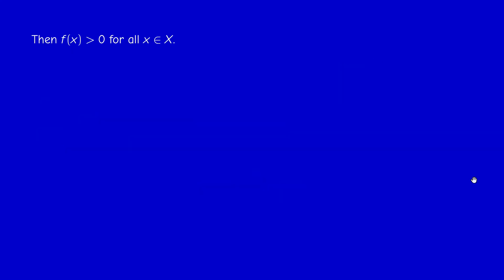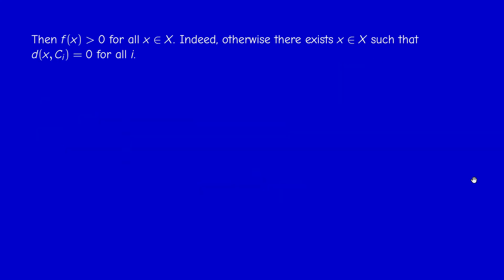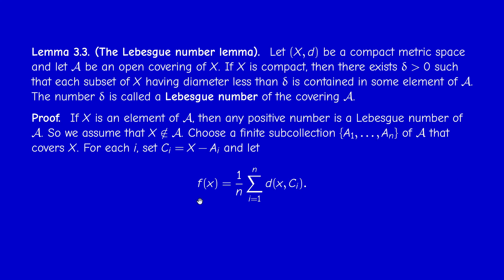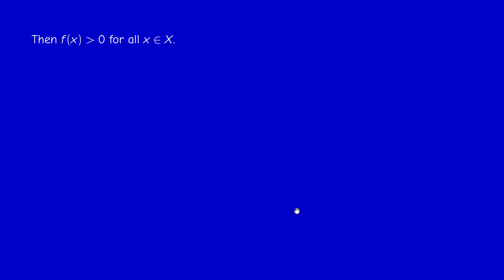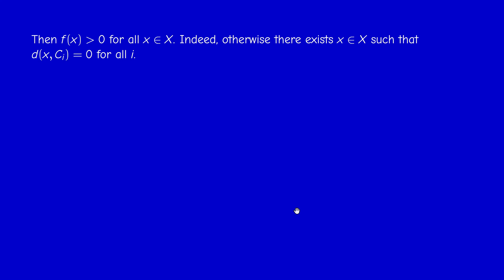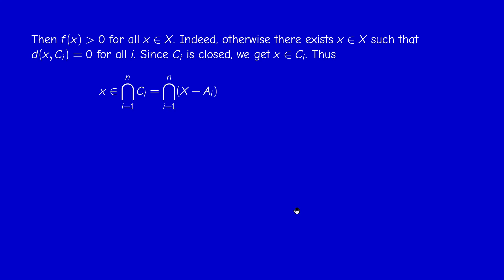I claim that F never vanishes — it is strictly positive. If F(x) = 0 at some point, then all terms in the sum are zero, meaning d(x, C_i) = 0 for all i. Since each C_i is closed, this means x belongs to C_i for all i. Therefore x belongs to the intersection of all C_i, which is the complement of the union A_1 ∪ ... ∪ A_N. But this is empty since A_1 through A_N cover X — a contradiction.